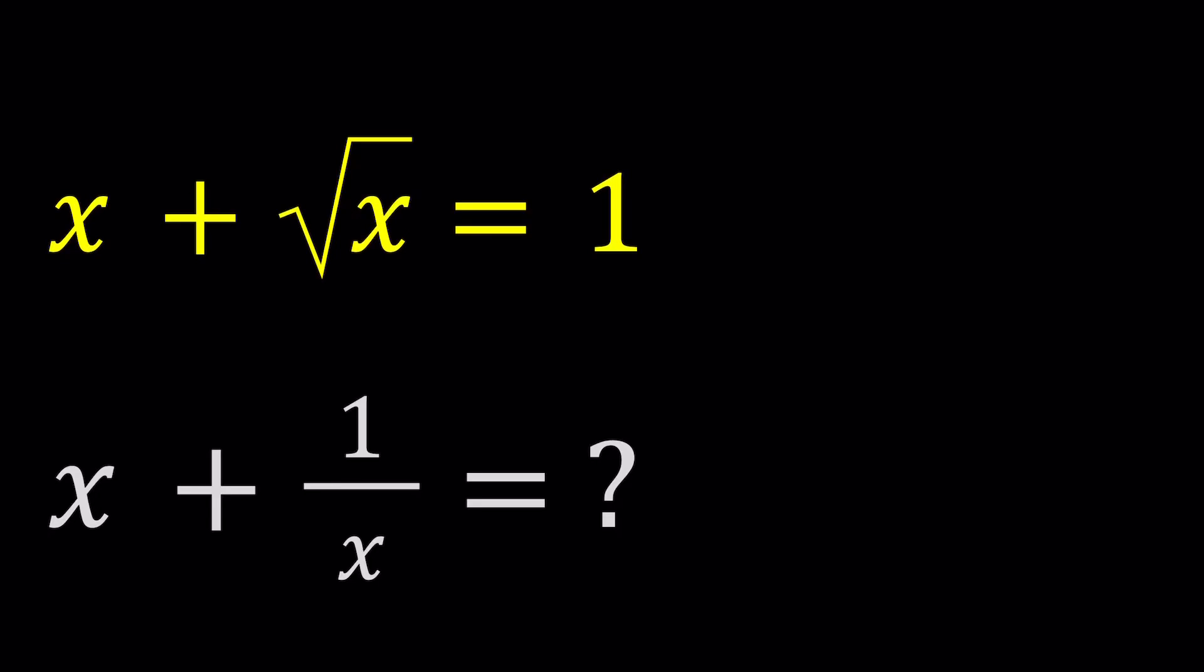Hello everyone. In this video, we're going to be dealing with a radical equation. We have x plus square root of x equals 1, and we're going to evaluate numerically x plus 1 over x. So based on the values that we get from the first equation, we're going to evaluate the second expression. Let's go ahead and check it out.